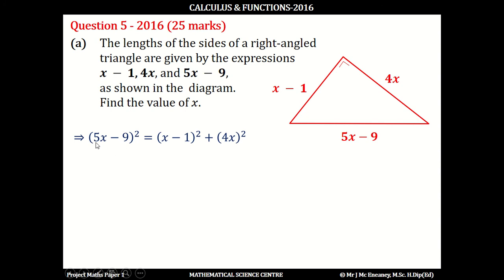So if we square out the left-hand side, this will give 25x squared minus 90x plus 81, and this will equal x squared minus 2x plus 1 plus 16x squared.